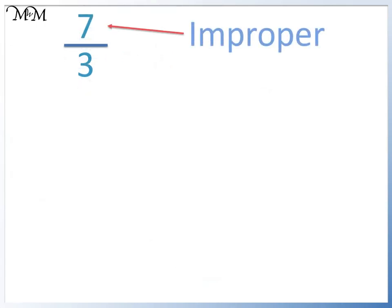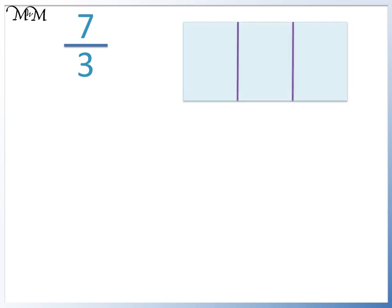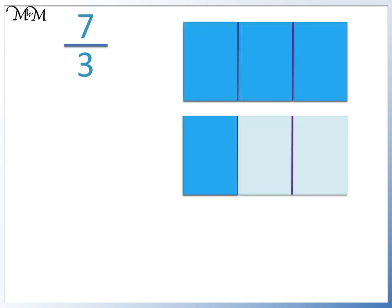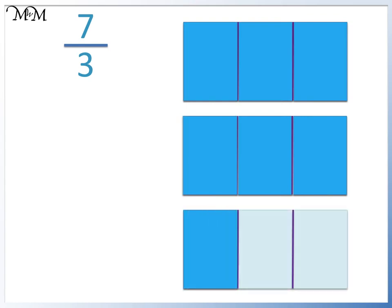Looking at 7 out of 3, it is also improper because the numerator, 7, is larger than the denominator, 3. We can visualize the 7 thirds. We have 1, 2, 3, 4, 5, 6, 7 thirds.